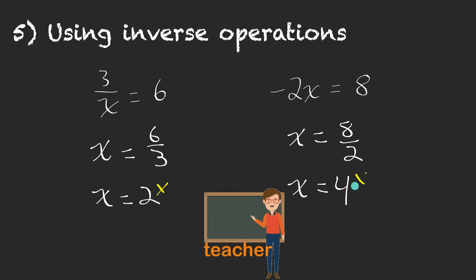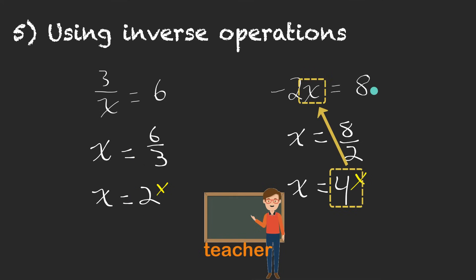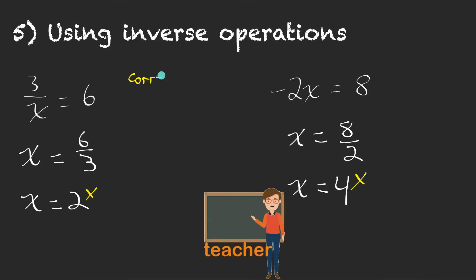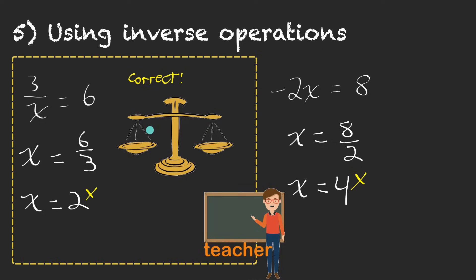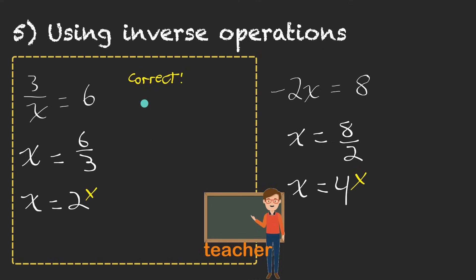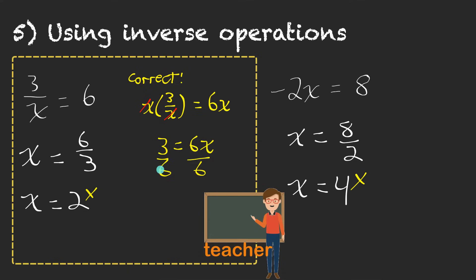So you're right — you do have to do inverse operations to isolate a variable. It's just you chose the wrong operations, so you got incorrect answers. Don't forget, you can check to see if your answers are right by plugging them into the original equation. If I plug 2 in for x into the first equation, 3 divided by 2 is not 6. If I plug 4 in for x into the second equation, negative 2 times 4 is not 8. To avoid making this mistake, I think you should approach it with the balanced method when solving equations. Whatever you do to one side, do it to the other side. When your variable is in the denominator, let's multiply both sides by that variable to get it out of the denominator. So x times 3 over x equals 6 times x.